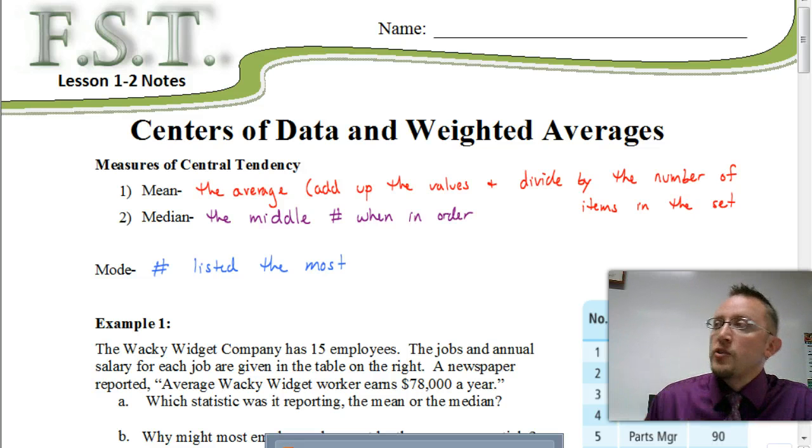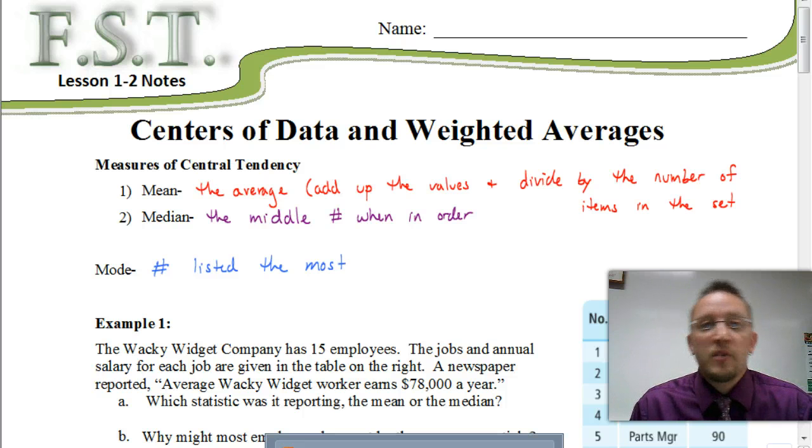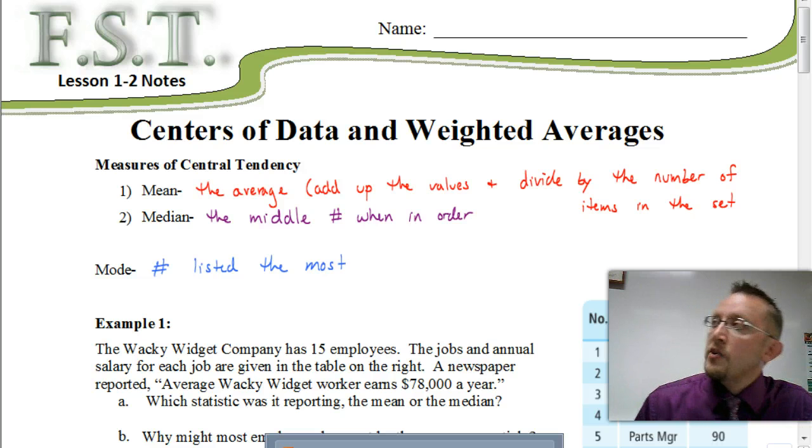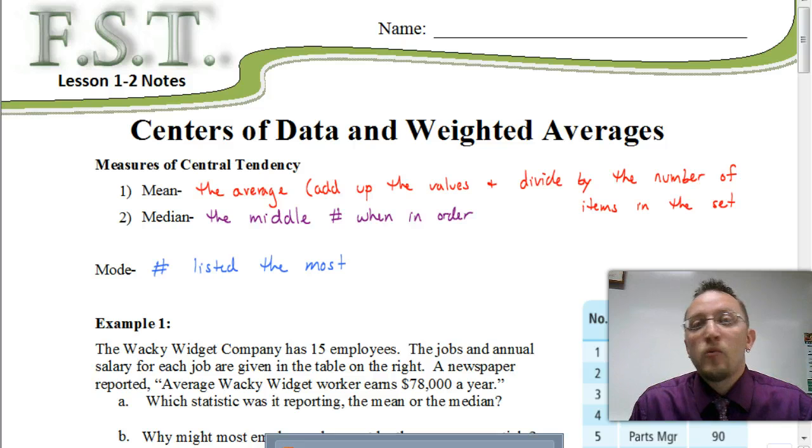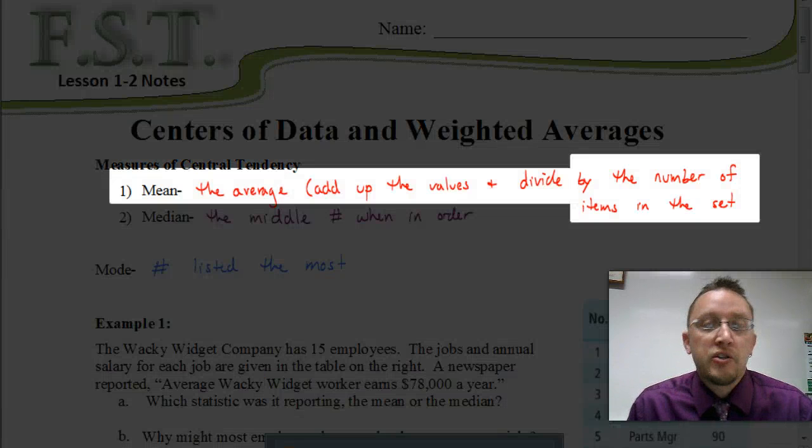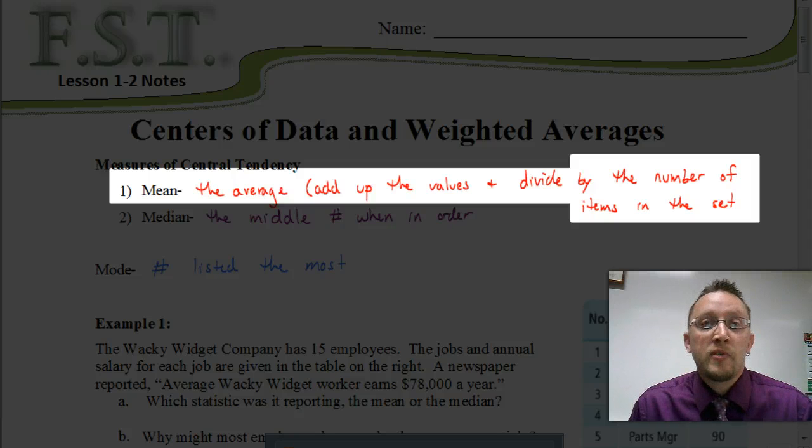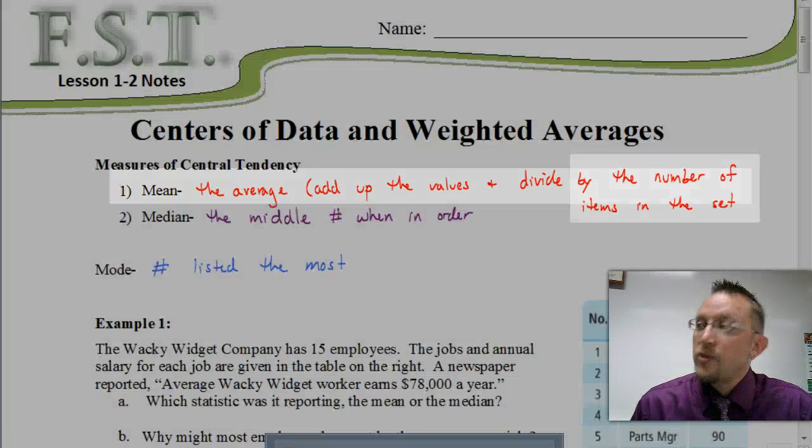But to start out with, let's first look at defining a couple of terms that we're going to be using in this first section. We're going to need to understand what the difference is between a mean and a median. The mean, both of these you should already be familiar with, but a mean is something that you're really familiar with because you use it a lot with determining your grades. Because a mean is simply an average. And remember, an average is where we add up all the numbers and divide by the number of items that are in that set. So that's what a mean is.